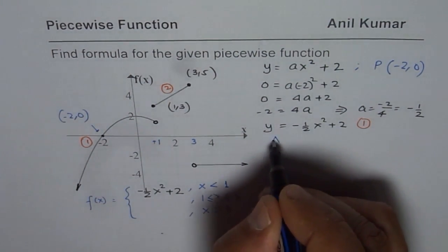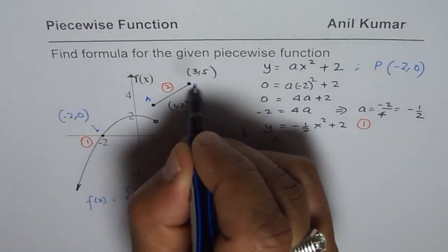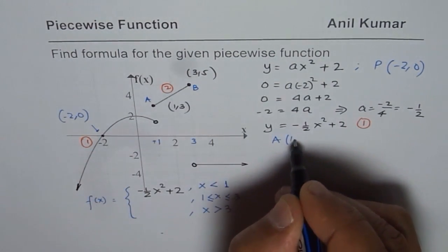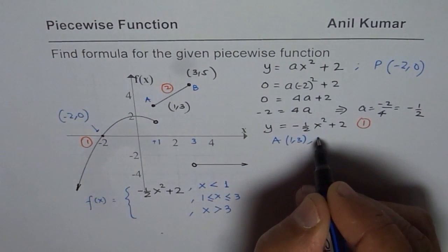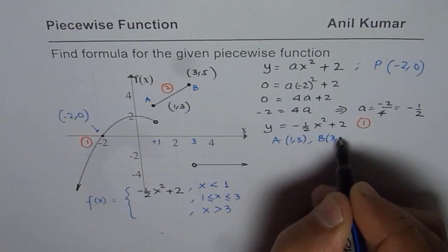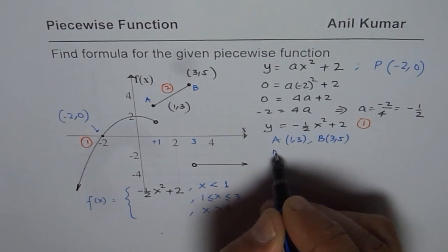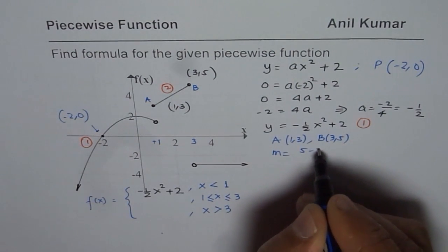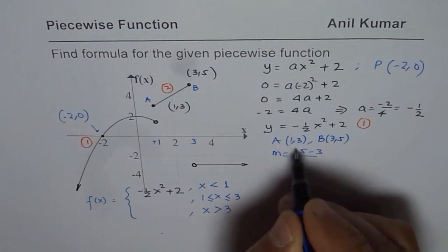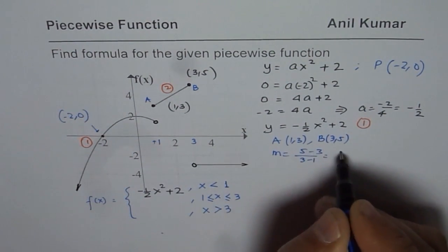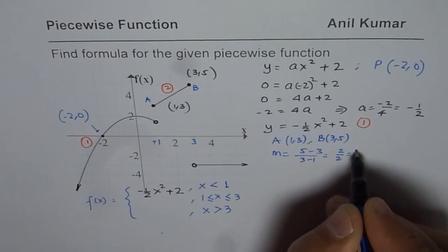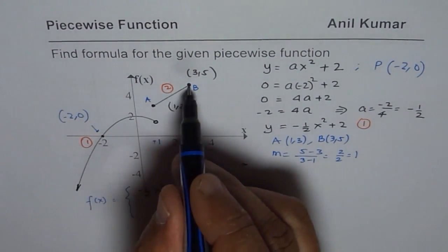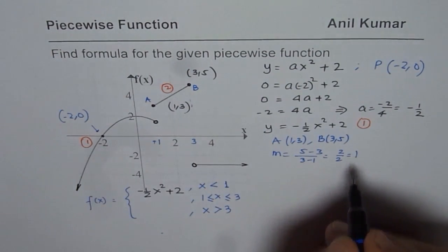So we have points A and B, let us call them A and B. Which is 1 and 3 and B is 3 and 5. So from here slope is equal to 5 minus 3 over 3 minus 1, which is 2 over 2, which is 1. You could actually find slope by making a triangle here also. So M is 1.